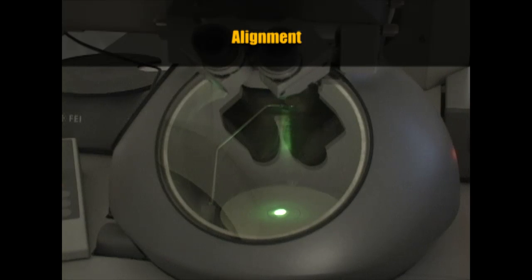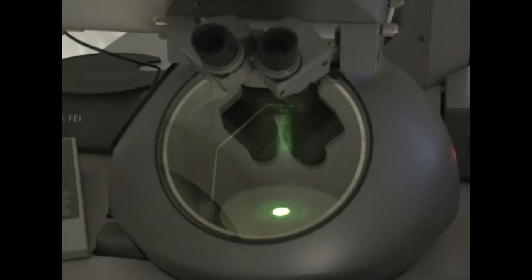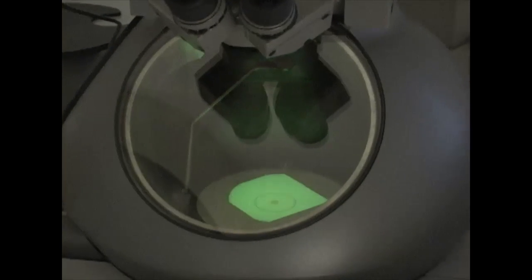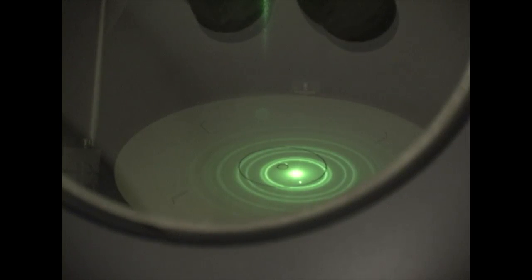Next, we will do alignment. Use the track ball to move the beam to the center, spread the beam, increase magnification, and then condense the beam. The rings are caused by diffraction.